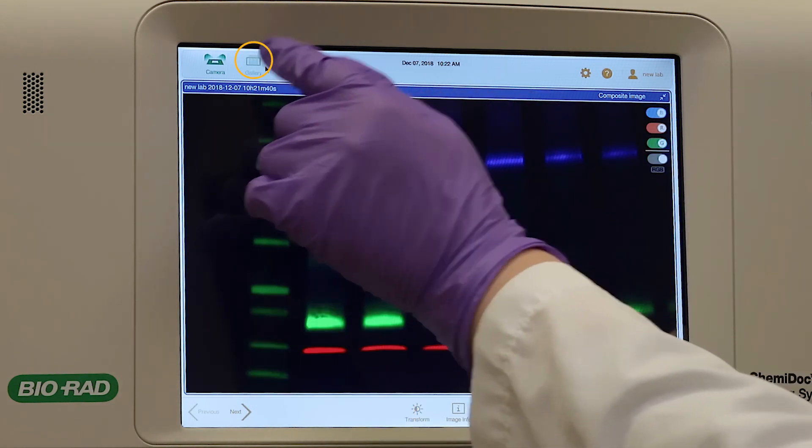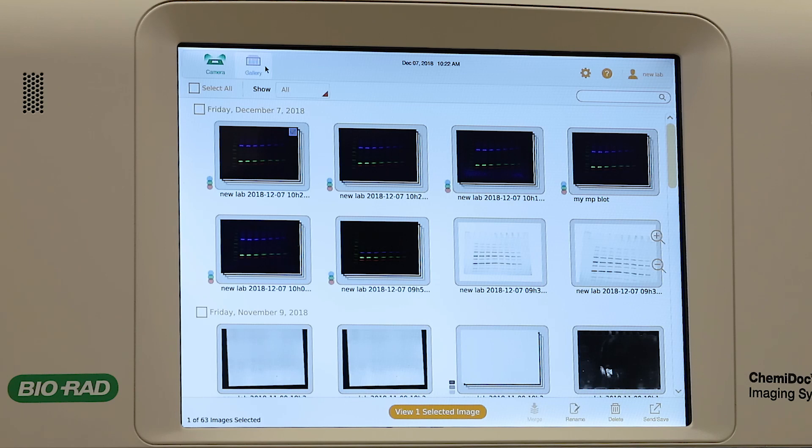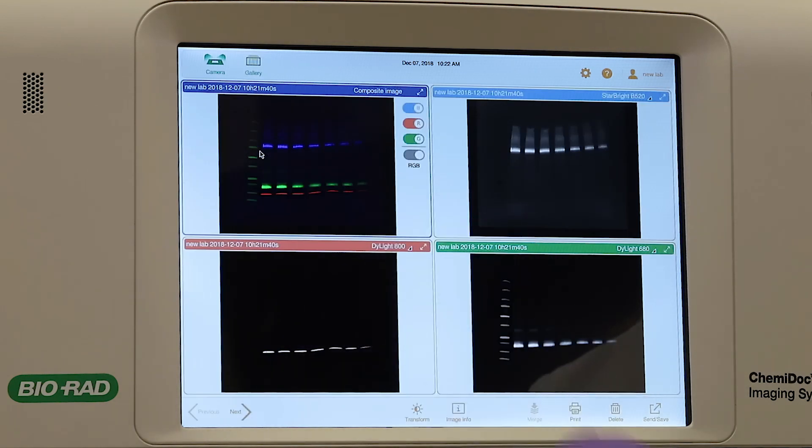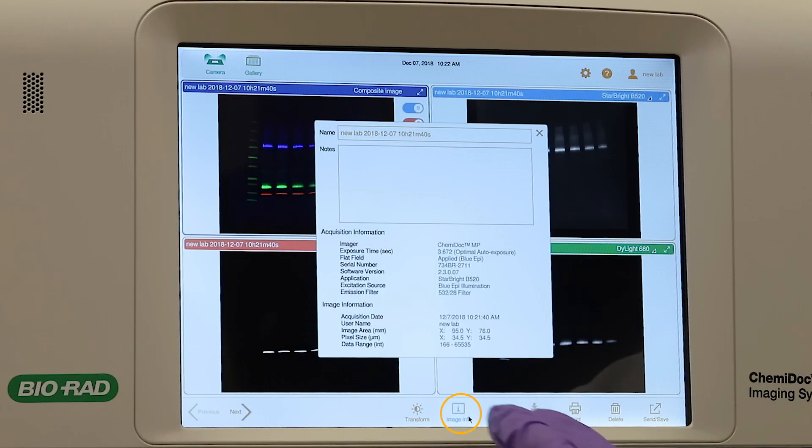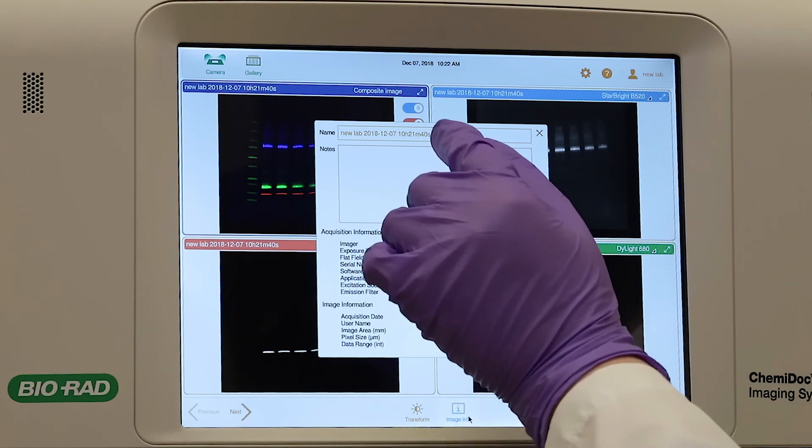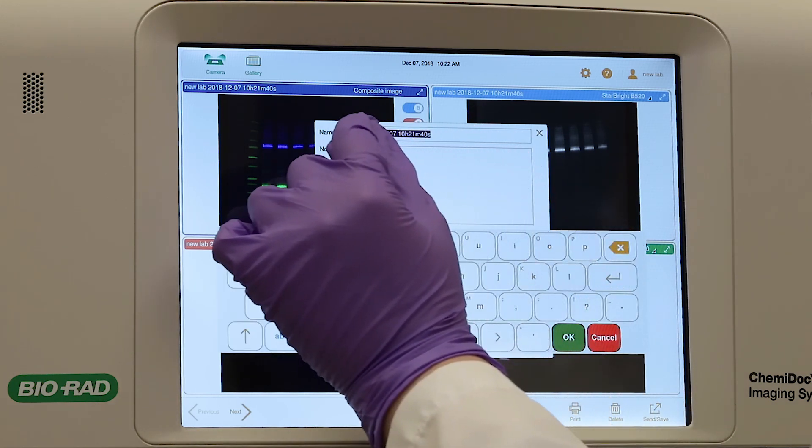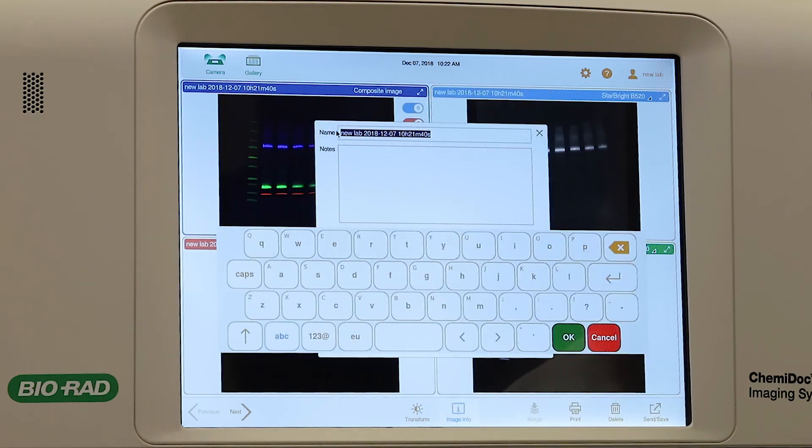Your images will be automatically saved and exported to the gallery. Tap the Image Info icon. Here you can enter a custom name and any notes you'd like to include about your image or experiment.